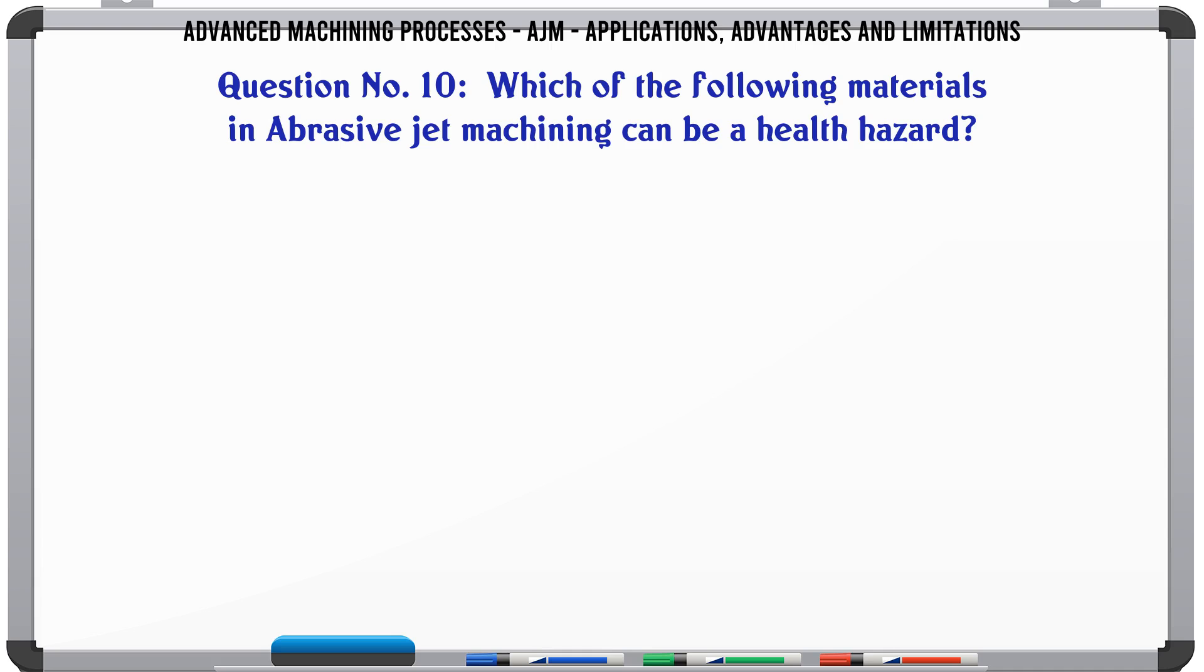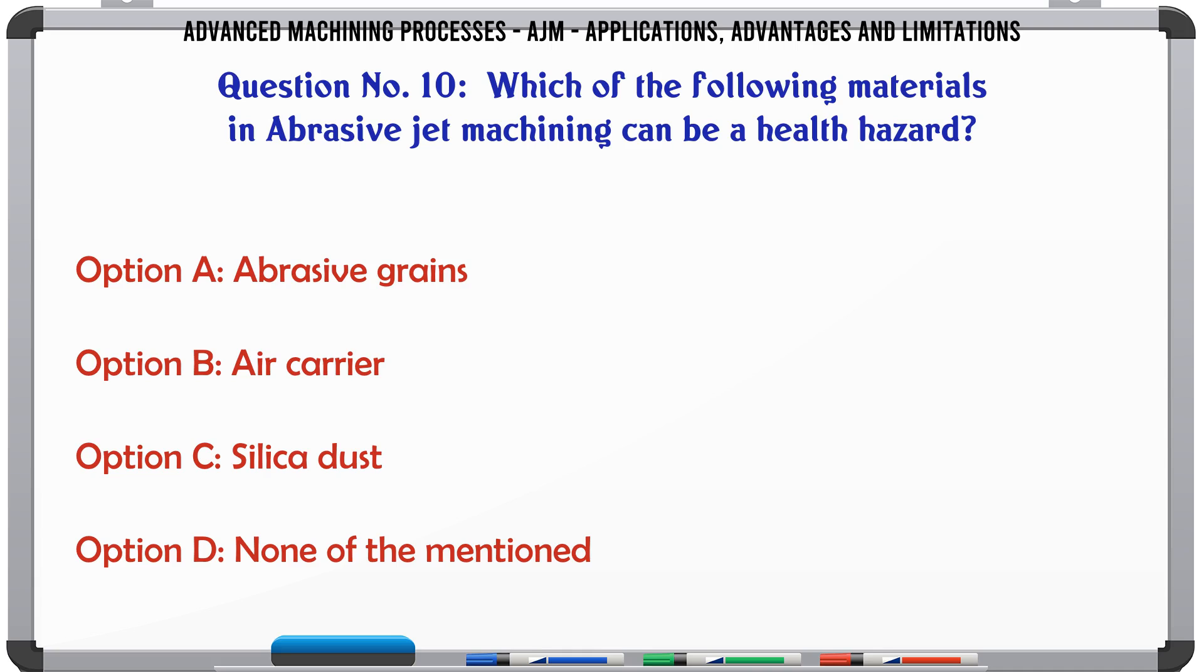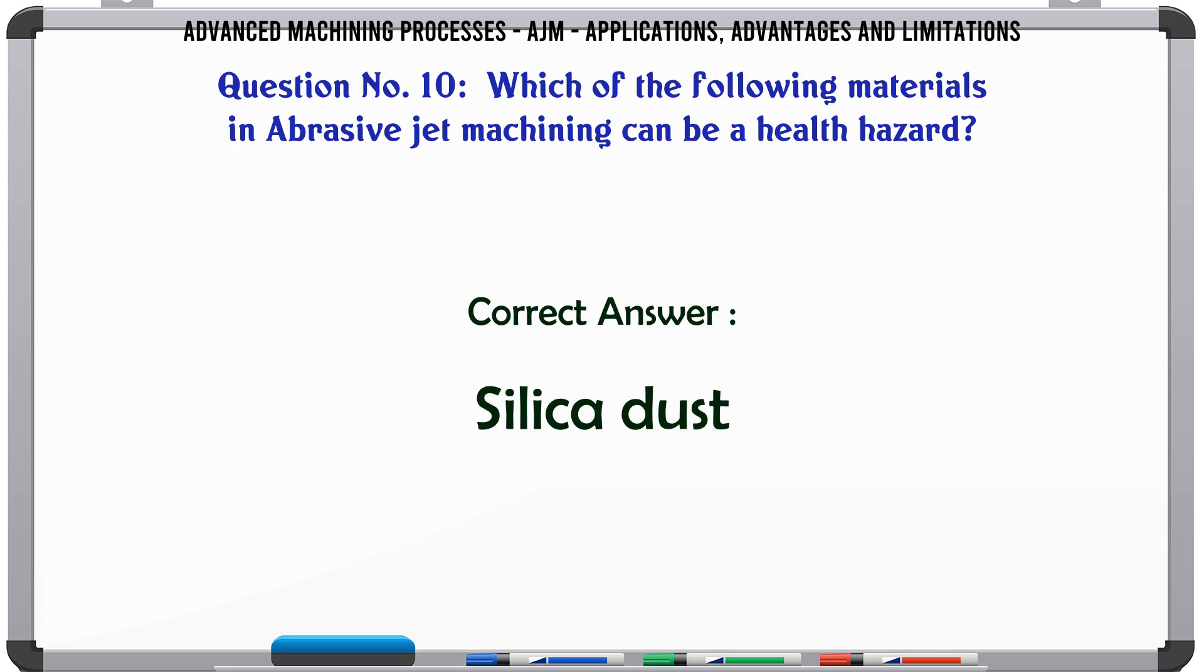Which of the following materials in abrasive jet machining can be a health hazard? Option A: Abrasive grains. Option B: Air carrier. Option C: Silica dust. Option D: None of the mentioned. The correct answer is silica dust.